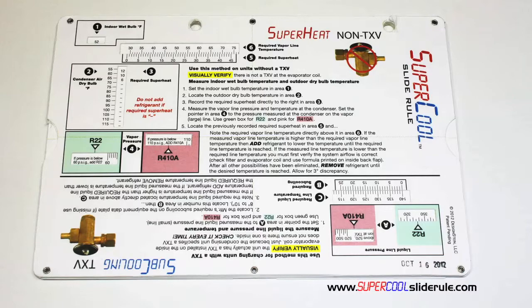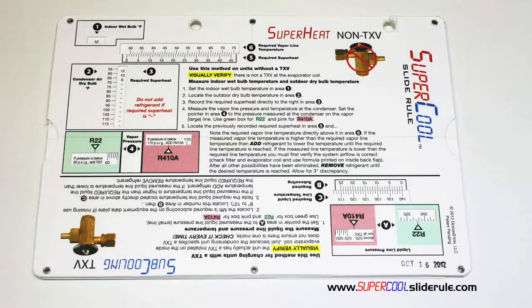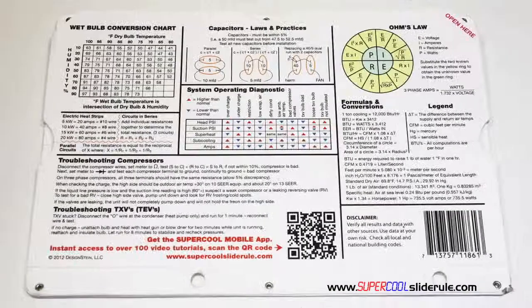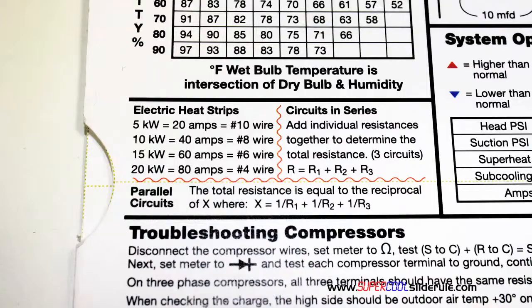This one tool will allow you to charge a system with R22 or R410A in either the superheat or subcooling method. The back cover contains required formulas, capacitor rules and practices, a wet bulb conversion chart, and how to perform computations on series or parallel circuits.